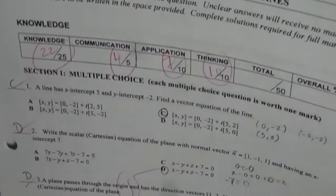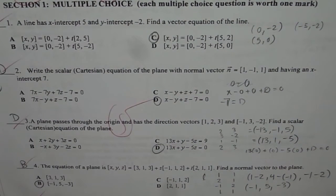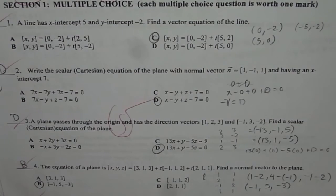Now here are question number 3 and 4. It says a plane passes through the origin and has the direction vectors 1, 2, 3 and minus 1, 3, minus 2. Find a scalar or Cartesian equation of the plane.